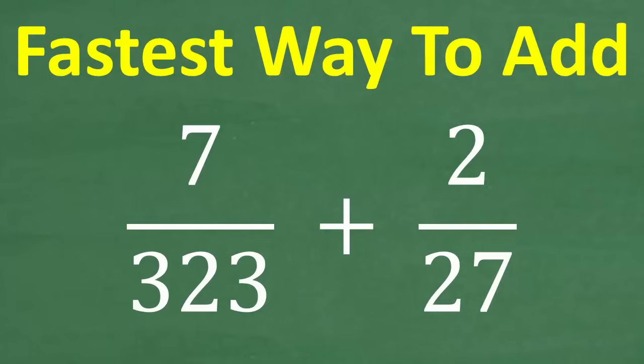Well, that is absolutely true. So what we're going to need here is the lowest common denominator. Well, that's not going to be so easy to find, because our denominators here are 323 and 27. So finding the LCD with these denominators is not going to be so easy, even if you have a calculator.